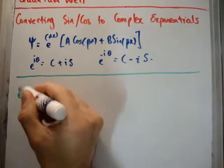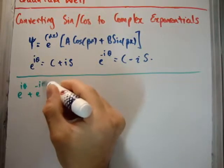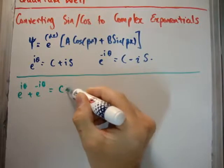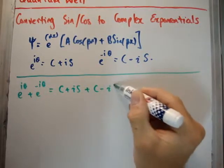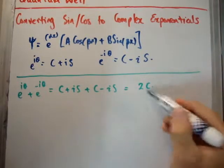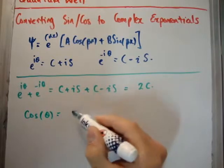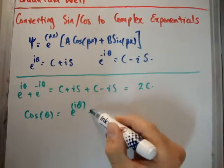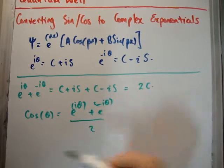So what happens if I add E to the i theta plus E to the minus i theta? Simply, that's going to be cos plus i times sine plus cos minus i times sine is equal to twice cos. Or what we can say is we can rewrite it and say that cos of theta is equal to E to the i theta plus E to the minus i theta over 2. Done.